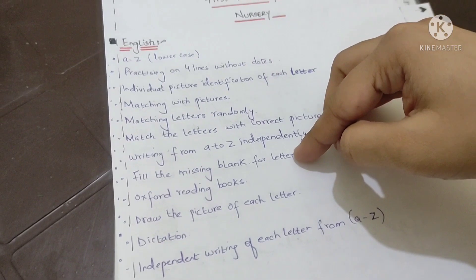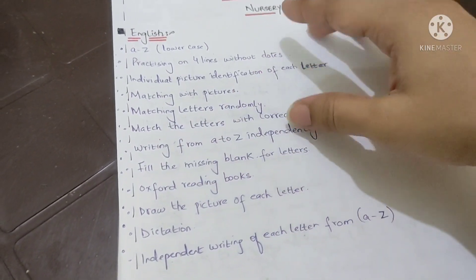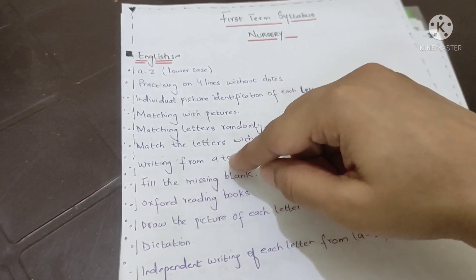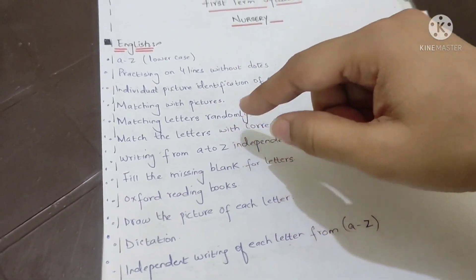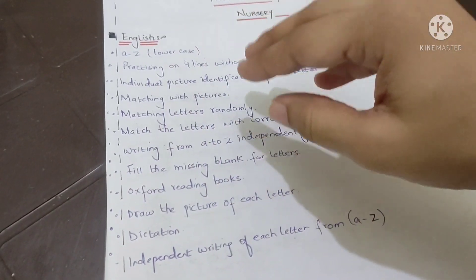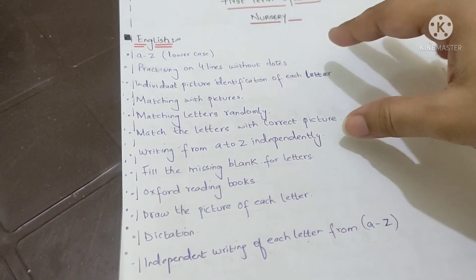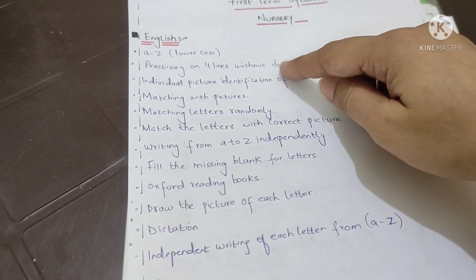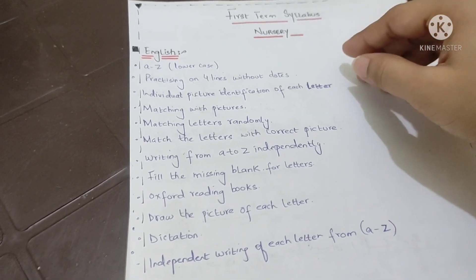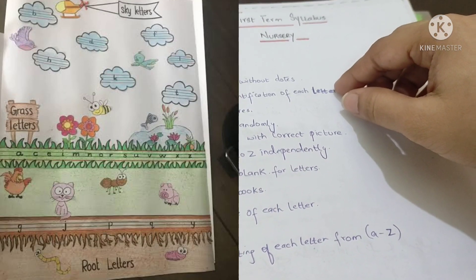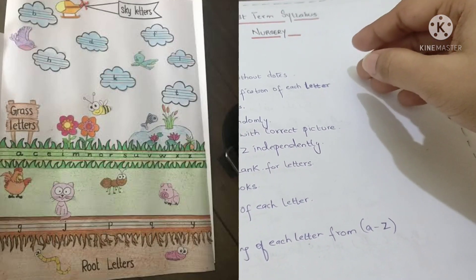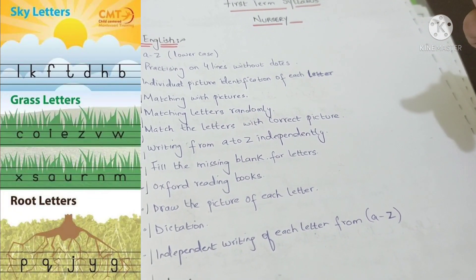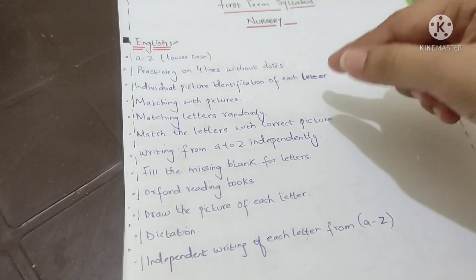The next thing is individual picture identification of each letter. They have done that in their previous class, but now there are more pictures related to the letters. You can easily find worksheets for it, or you can find pictures and have them write or paste the letter alongside the picture.